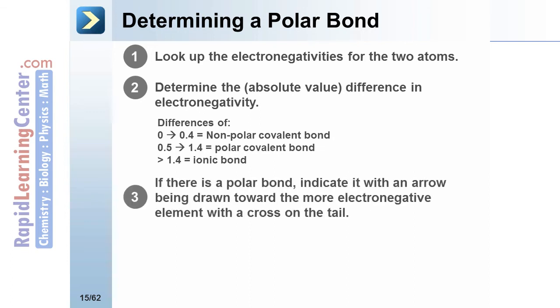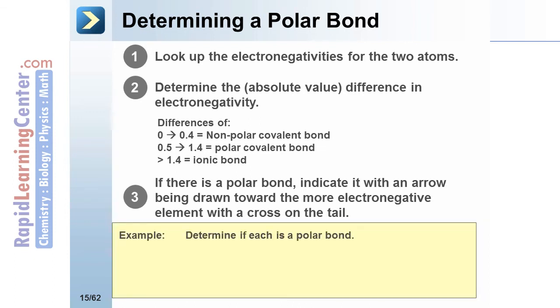If there is a polar bond, indicate it with an arrow being drawn towards the more electronegative element. Place a cross on the tail. This shows the element that has a slightly positive charge.